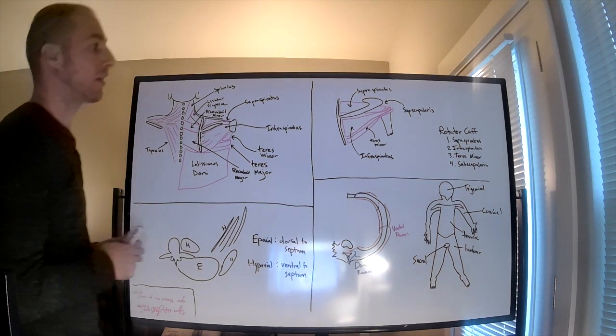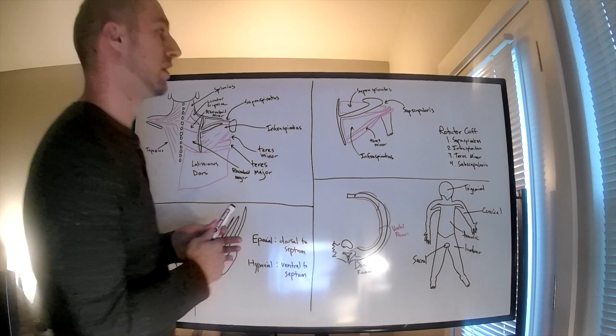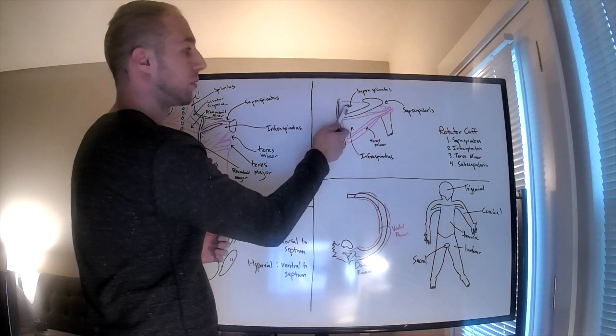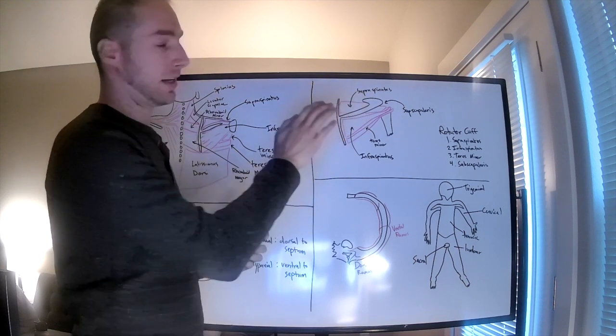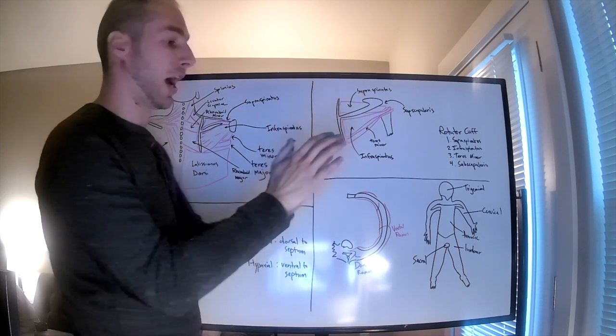Moving on to the rotator cuff, taking a couple of these and moving over here, you have the supraspinatus, the infraspinatus, the teres minor, and then if you think about that scapula like a cup, on the other side of the cup you'll have the subscapularis muscle.